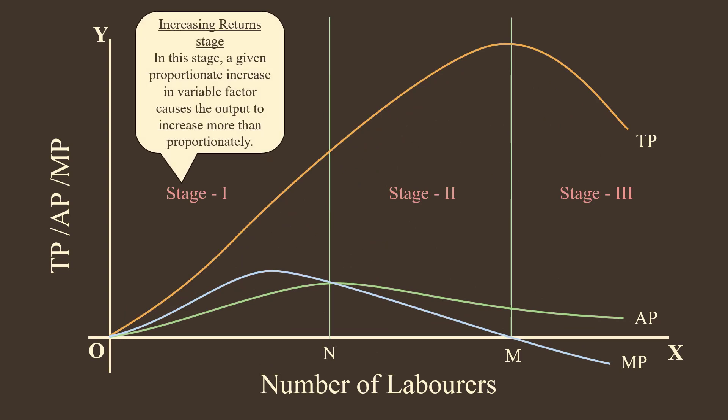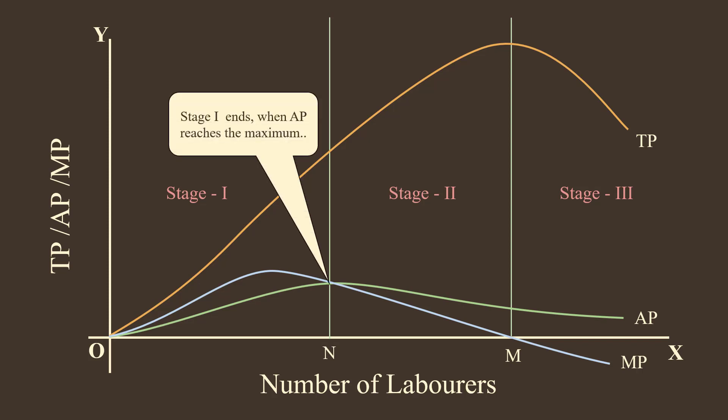In this stage, a given proportionate increase in variable factor causes the output to increase more than proportionately. Stage 1 ends when average product reaches the maximum.